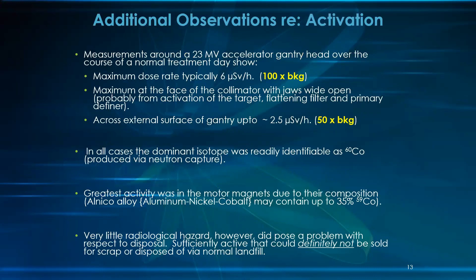Additional observations on reactivation: measurements around a 23 MV accelerator gantry head over the course of normal treatment days show a maximum dose rate of typically 6 microsievert per hour, maximum at the face of the column with the jaw wide open — probably from activation of the target and flattening filter. Primary dose across the external surface of the gantry is up to 2.5 microsievert per hour. In all cases, the dominant activated species was identified as cobalt-60, produced via neutron capture.